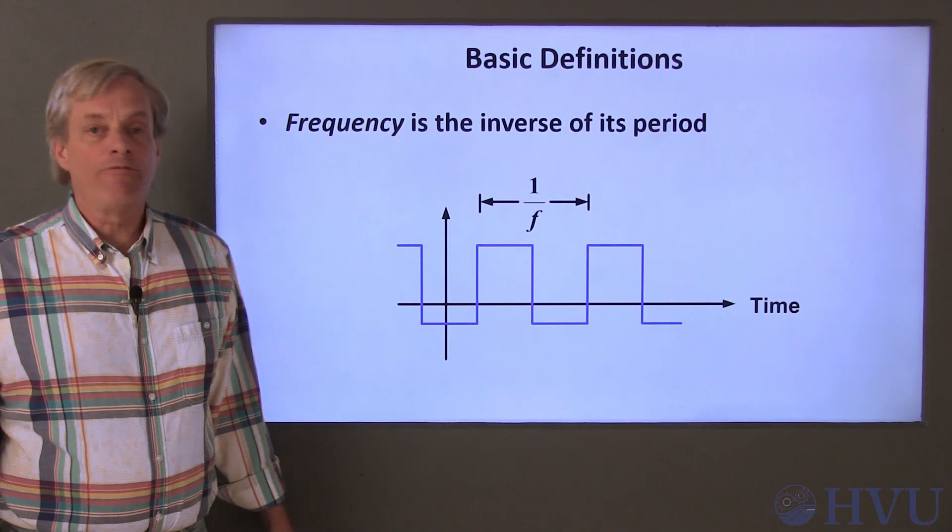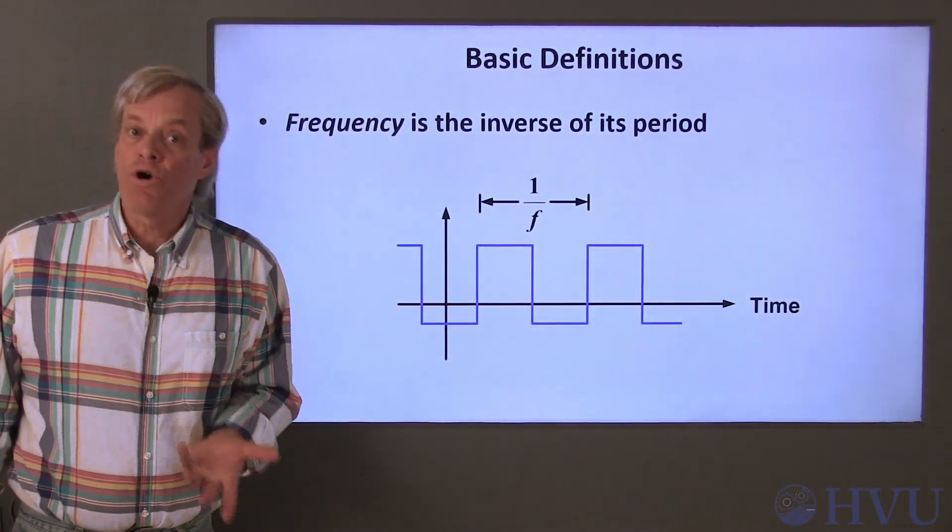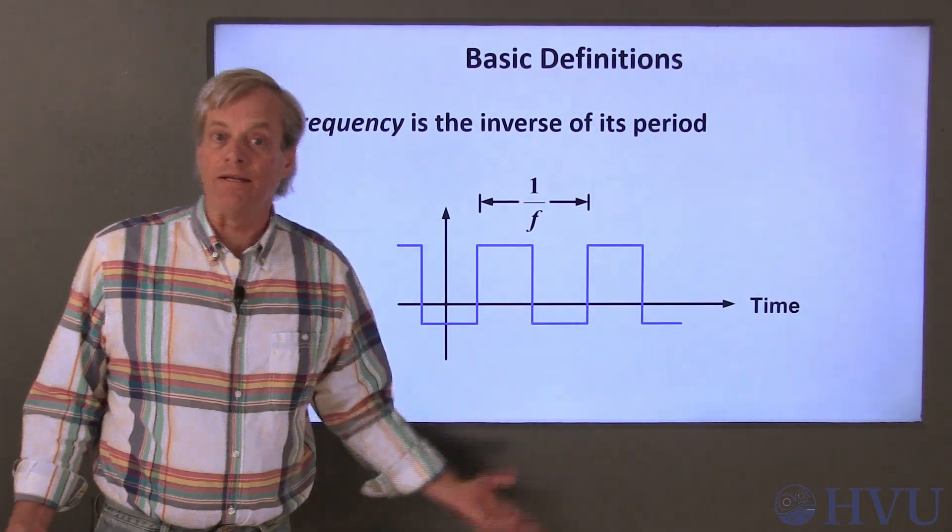For example, if we have a waveform with a period of a half a second, the frequency is 2 Hertz because it repeats itself twice in one second.